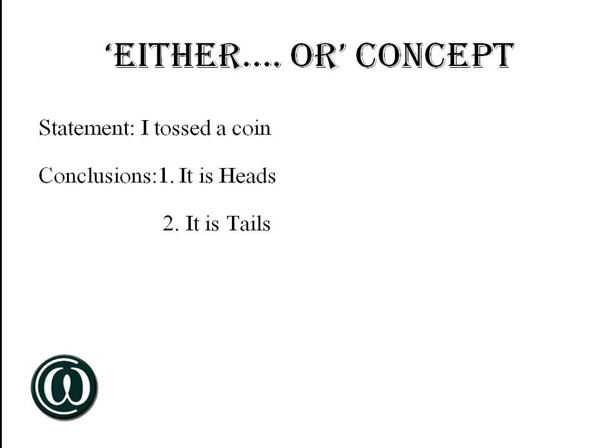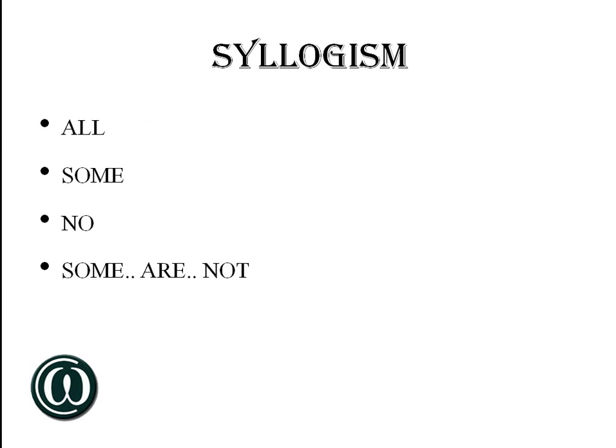And always remember either-or. Now let's see all, some, no, and some-are-not. This is the fifth type. It is a very ambiguous area so we won't get into the analytical method — let's try and understand the basics.